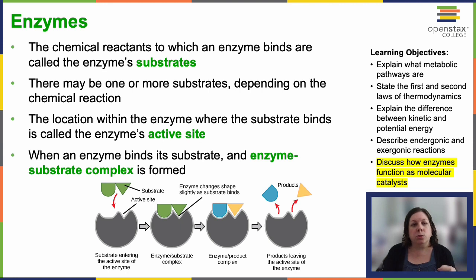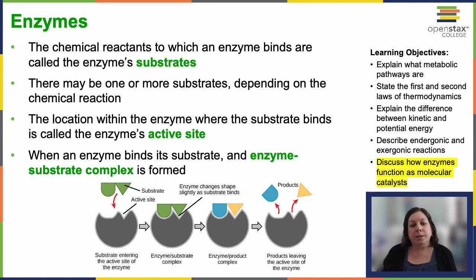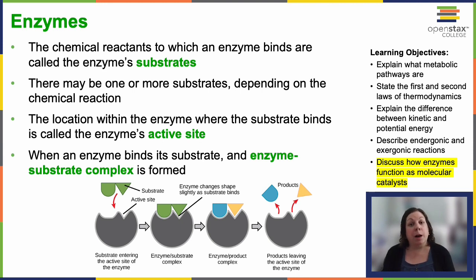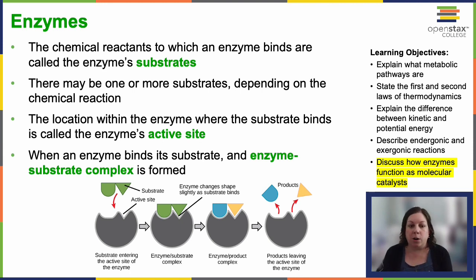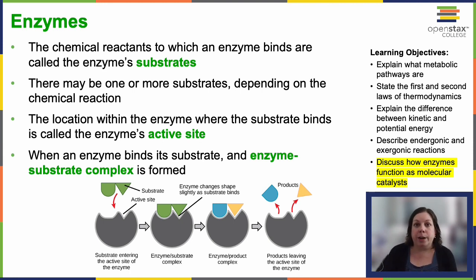The substances to which enzymes bind are called substrates, and there can be one or more depending on the specific reaction. Enzymes have active sites where the substrate binds, and the unique combination of amino acid side chains within the site creates a specific chemical environment suitable for a particular substrate to react within.